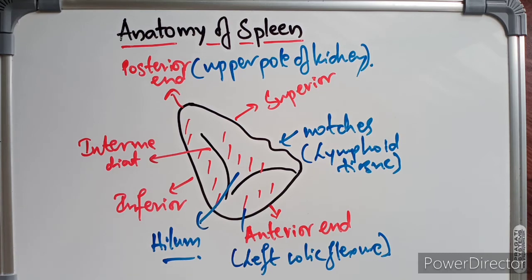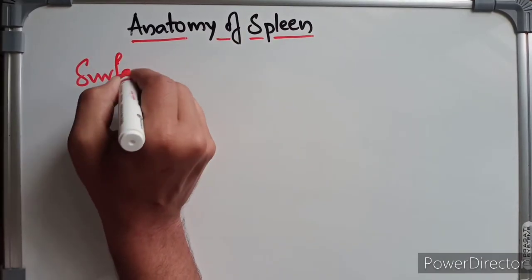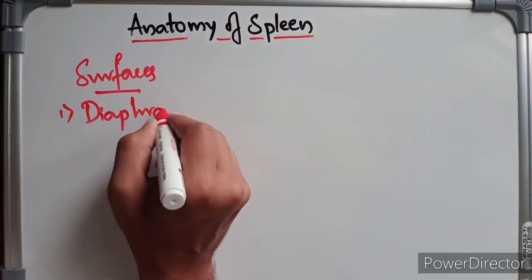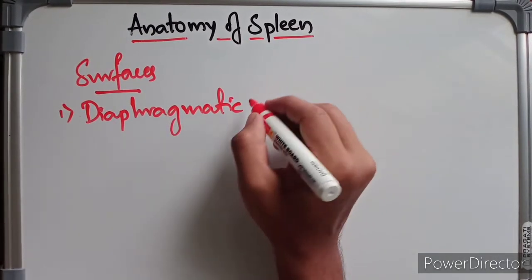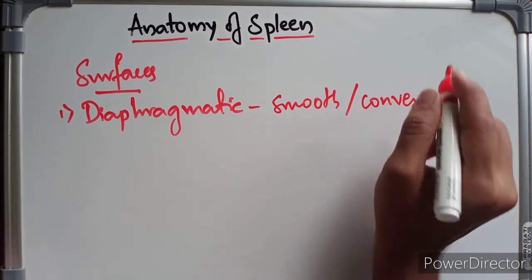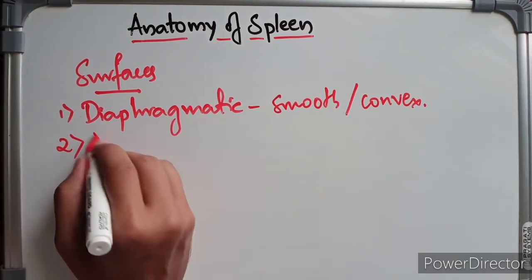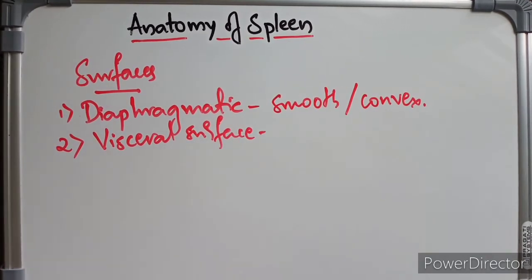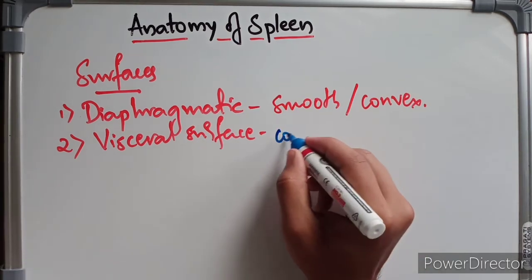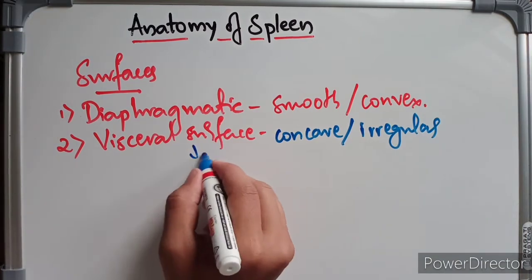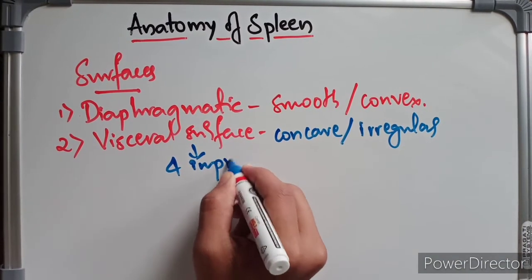The spleen has two surfaces. The diaphragmatic surface is smooth, convex, and directed upward. The second surface is the visceral surface, which is concave and irregular. The visceral surface presents with four impressions.